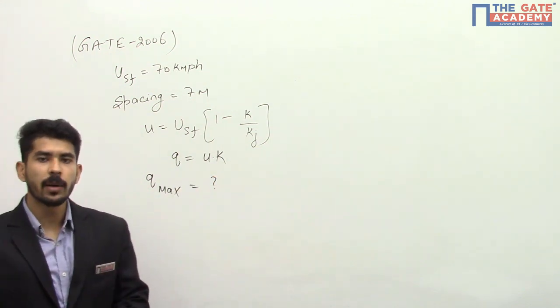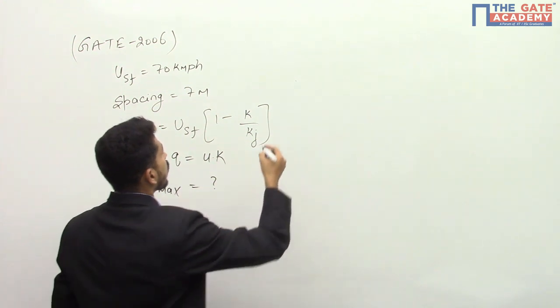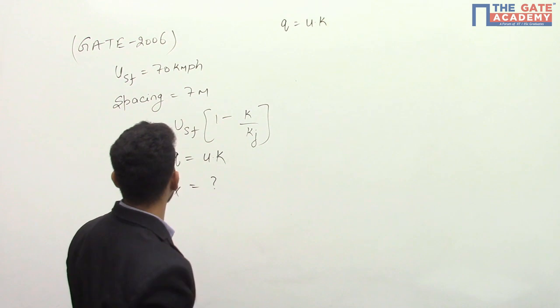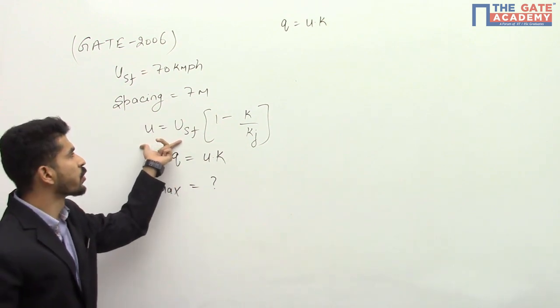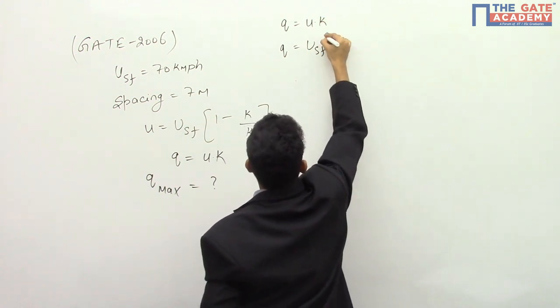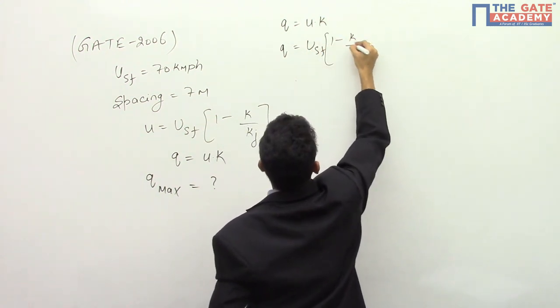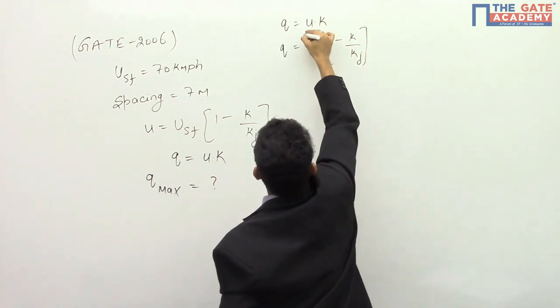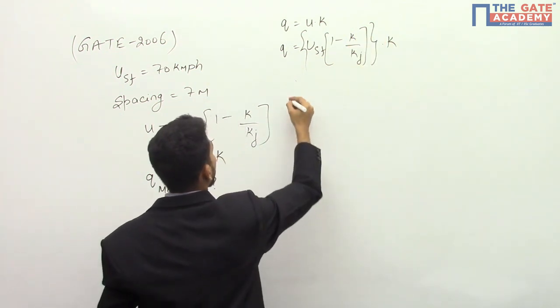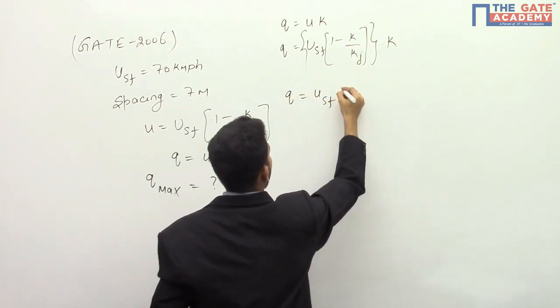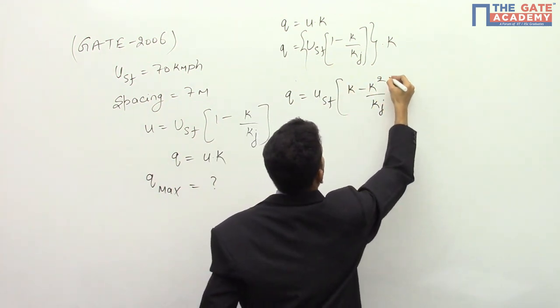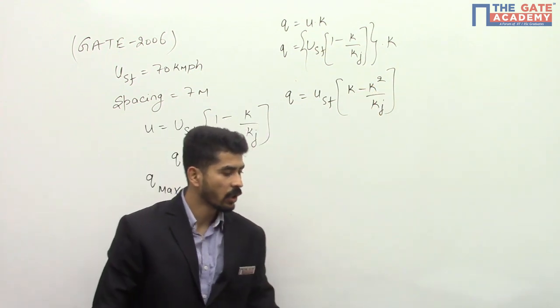If we follow the conventional approach, since we know that q equal to u into k, and we have an expression for u, let us substitute u over here. So q will be equal to usf into 1 minus k divided by kj, this is u, and into k. This will become q equal to usf as a constant into k minus k square divided by kj. So this is the expression for q.